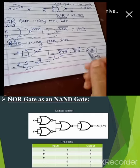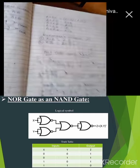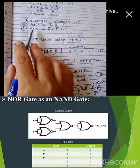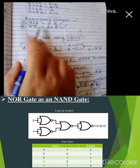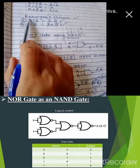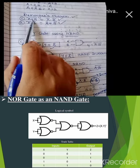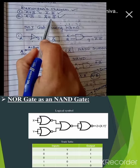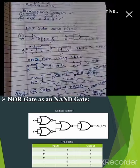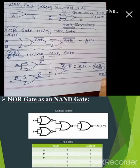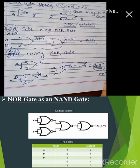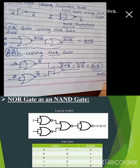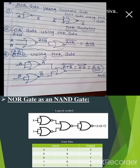You have to remember De Morgan's theorem. A plus B whole bar is converted into A bar dot B bar. A dot B whole bar is converted into A bar plus B bar. When there is a whole bar, the complement gets separated and the plus is converted into dot. Likewise, the whole bar gets separated and the dot is converted into addition.